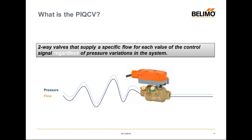For PI-QCV, it's a two-way valve that supplies a specific flow for each value of control signal, regardless of pressure variation in the system. When zones close, additional operating zones get more water than needed with a pressure-dependent valve. With pressure-independent valves, when zones close, operating zones maintain their design flow.